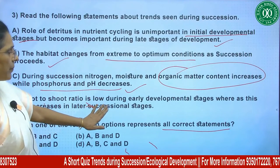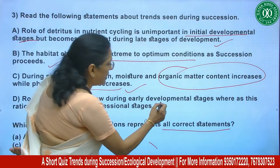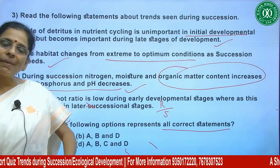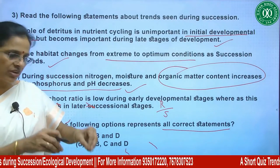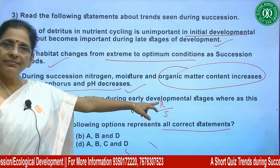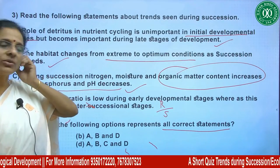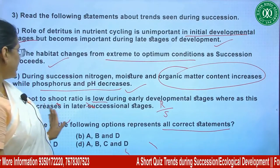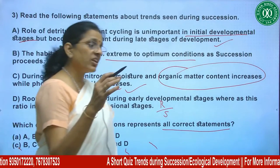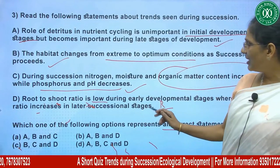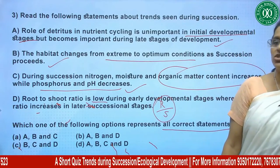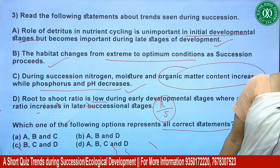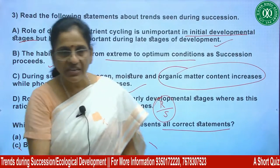Fourth statement: root-to-shoot ratio is low during early development but increases in later stages. In early stages, pioneer plants have small, shallow roots — so root biomass is low relative to shoot, giving a low ratio. In mature stages, large trees have very deep, extensive root systems — sometimes the roots below ground exceed what is above — so the root-to-shoot ratio increases significantly as the community matures. So this fourth statement is also correct.